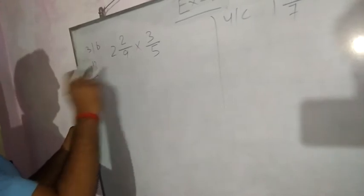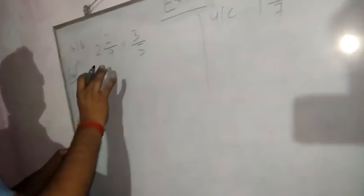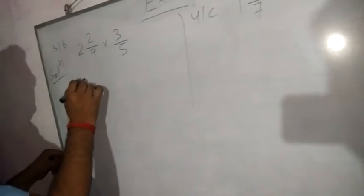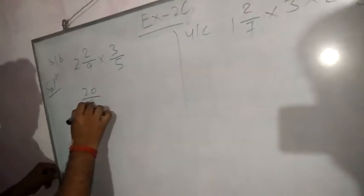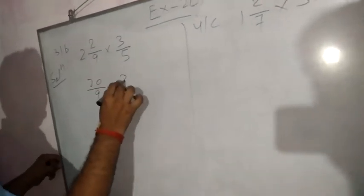Now this is the mixed form, so first change it to improper: 9 × 2 = 18, 18 plus 2 = 20, so 20/9 into 3/5.